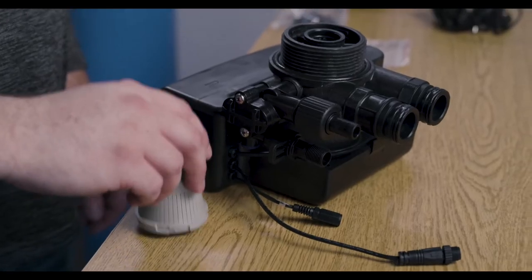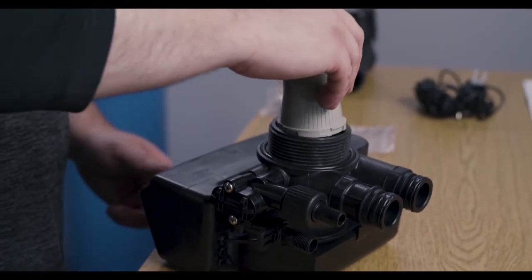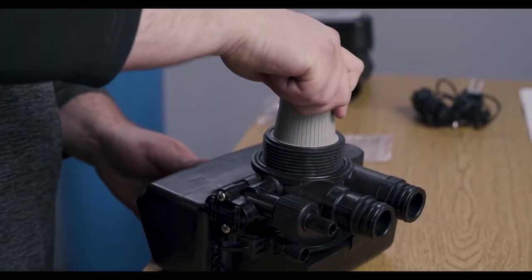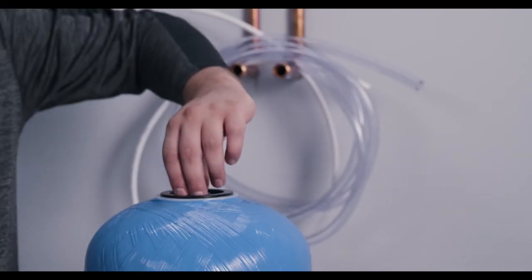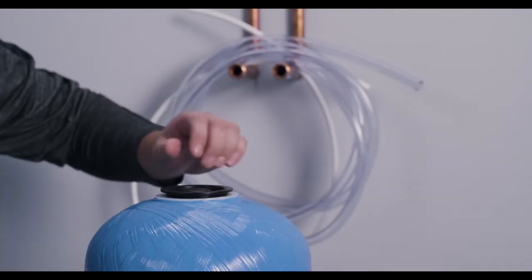Next, connect the upper distributor to the control valve by lining up the slots and twisting it counterclockwise until it locks. Remove the cap from the resin tank.